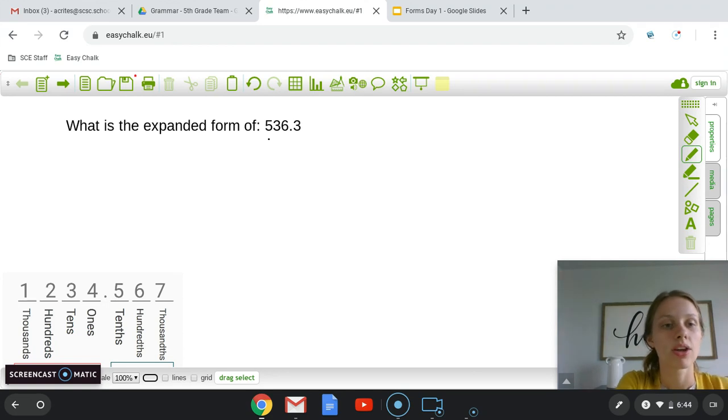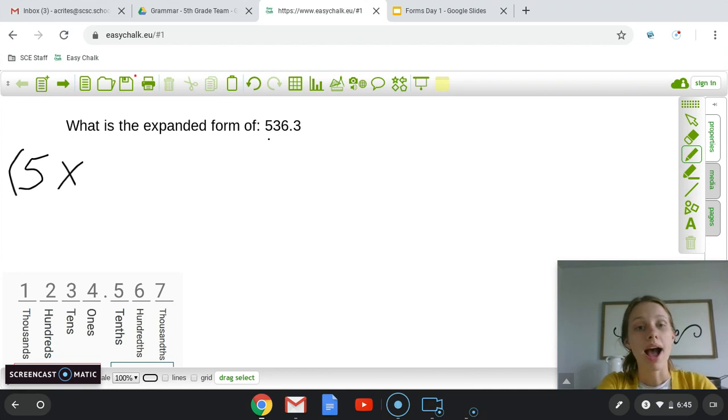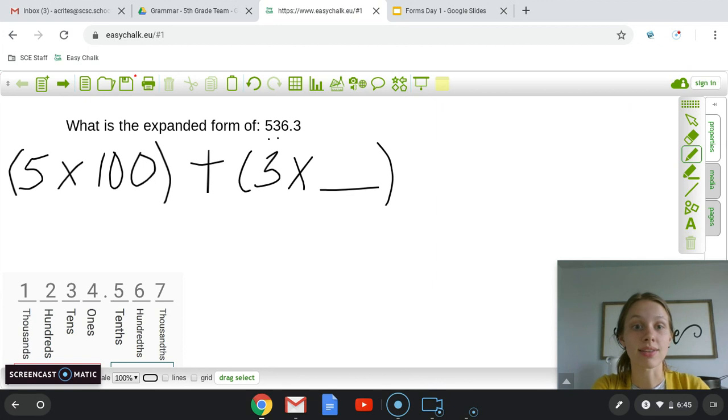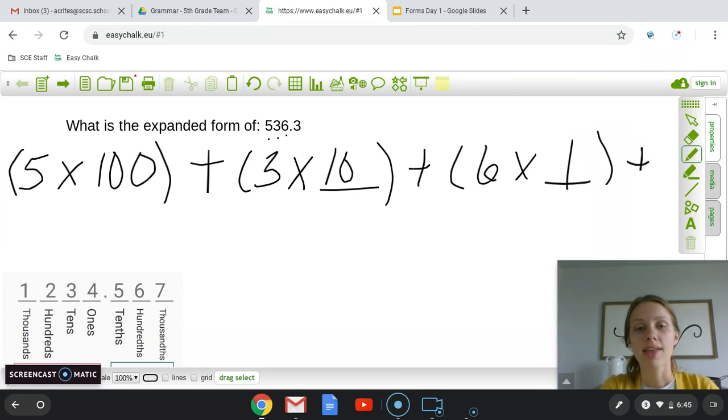First, I'm going to start with 500. So that's the first number. I see 5. So we have to put our 5 times... And then what's the place value? I've got the little place value chart at the bottom left if you need it. I know my 5 is in the 100th place value. So I do 5 times 100 plus parentheses 3 times. And then what is the place value that my 3 is in? I know that's in the 10th place value. So I'm going to do 3 times 10.